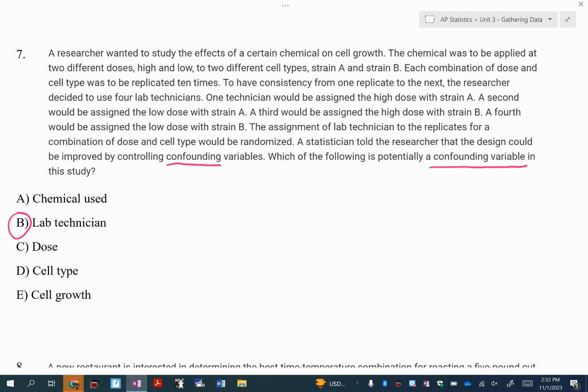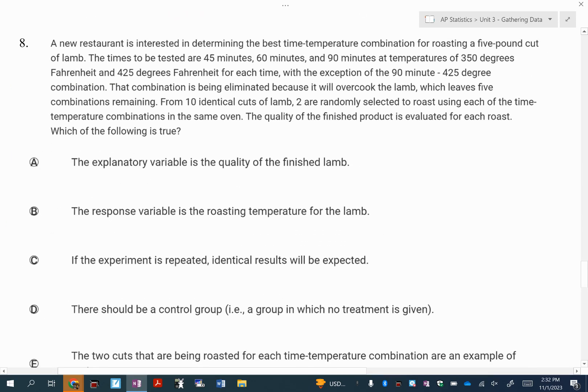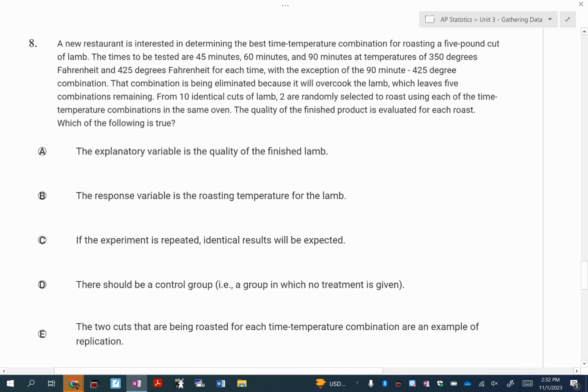And so the idea here is that the lab technician being randomly assigned to the different levels or the different dosages of these strains, the simplest thing to do is to use the same technician for all of these different doses and strains. By doing that, you eliminate any issues with maybe the technicians making some mistakes. So the idea of randomly assigning the lab technician is the confounding there.